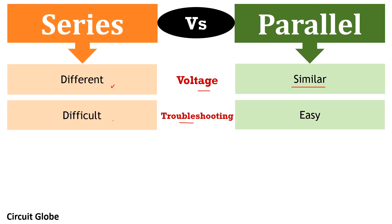Regarding fault detection or troubleshooting: a series circuit exhibits difficulty in troubleshooting compared to parallel circuits. In a series circuit, all components are connected through a common wire with a single current flowing through each, so if any component malfunctions it is difficult to identify which one is not working. In a parallel circuit, troubleshooting is easier because components have separate connections through individual wires, and different currents flow through each branch, making it easy to identify which component is faulty.